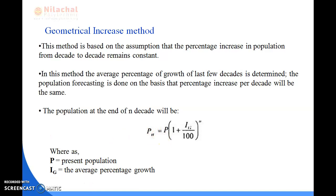Here, Pn is the population after n decades, P is the present population, Ig is the average percentage growth, and n is the number of decades — where 10 years equals 1 decade and 20 years equals 2 decades.